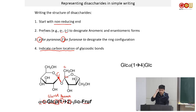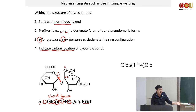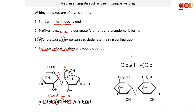In another example, we have glucose alpha-1,4-glucose. You may be asked to draw this structure on an exam. Given glucose alpha-1,4-glucose, alpha means the OH is going to point down. It's 1,4 — this is carbon 1 — and here's my second glucose ring: 1, 2, 3, 4. So it's going to bond to carbon number 4.